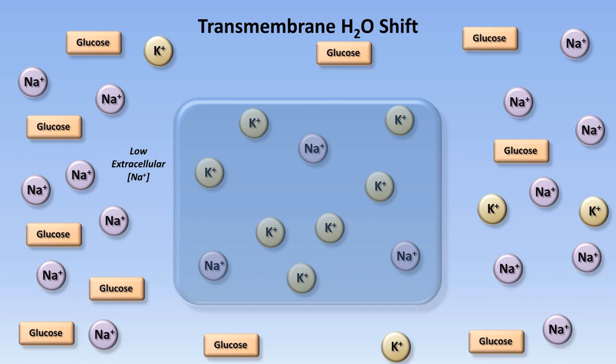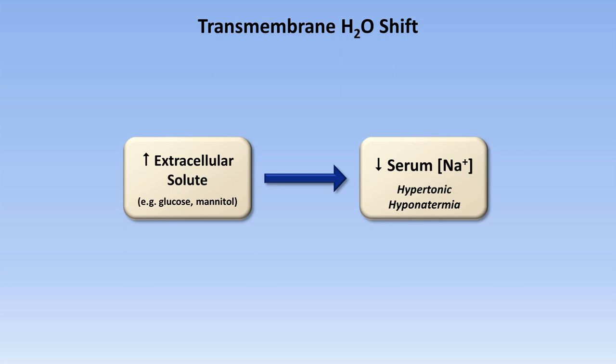To generalize this process, whenever the body produces or is given an excessive amount of an extracellular solute that lacks the ability to be rapidly taken up by cells, for example glucose, or a drug called mannitol, the consequence is low serum sodium, a specific situation called hypertonic hyponatremia. The word hypertonic refers to the fact that the total solute concentration in the extracellular fluid is higher than normal.